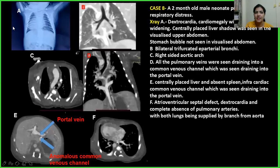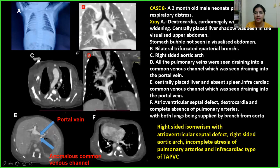Case 8: A two-month-old male child. On X-ray, dextrocardia, midline liver, bilateral trilobed eparterial bronchi, and right-sided aortic arch were seen. Pulmonary veins formed a venous channel draining into the portal vein. Dextrocardia, AV septal defect, and complete absence of pulmonary arteries were noted. This was a case of right-sided isomerism with AV septal defect.